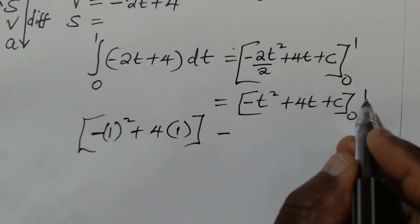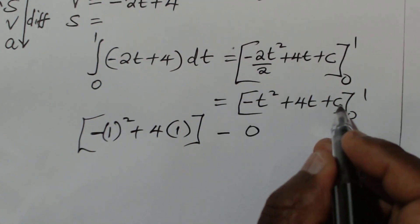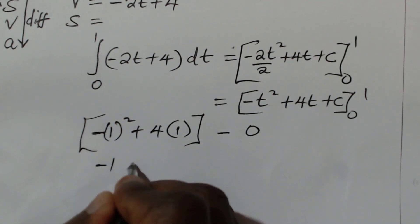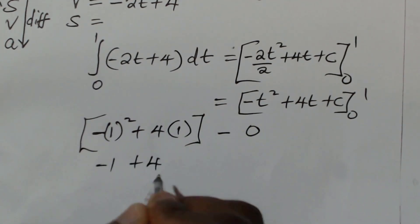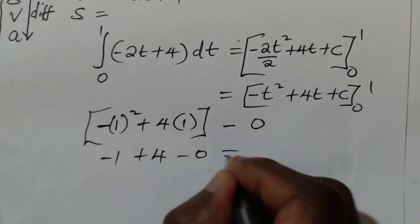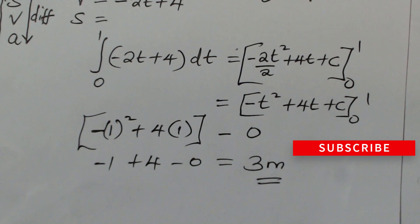Then subtract when you substitute 0 in this expression. Of course, you'll get 0 because c will get subtracted. And this will give negative 1 plus 4. Negative 1 plus 4 minus 0. And this will give 3 meters as the distance.